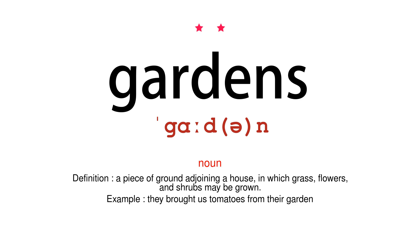Noun. Definition: A piece of ground adjoining a house, in which grass, flowers, and shrubs may be grown. Example: They brought us tomatoes from their garden.